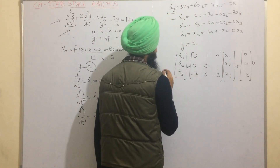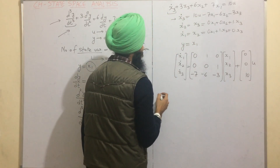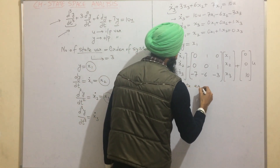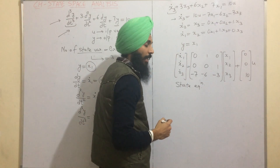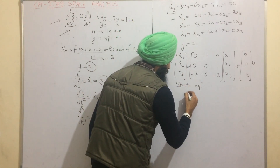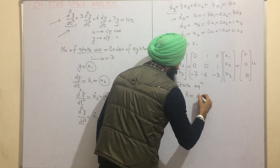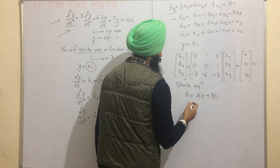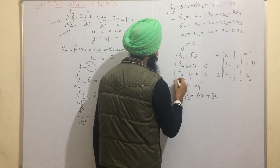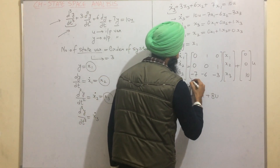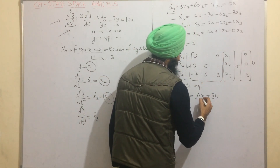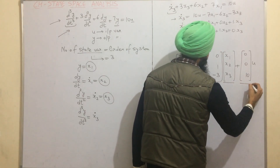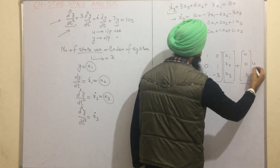This is now in the form of the state equation: x_dot = Ax + Bu, where x_dot is the state derivative vector, A is the system matrix, x is the set of state variables, B is the input vector, and u is the input.